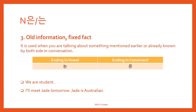Number three: if the noun is old information or a fixed fact, you can use 은/는. It is used when you are talking about something mentioned earlier or already known by both sides in the conversation. Ending in vowel 는, ending in consonant 은. For example, 'We are students' — this is a fact we already know, so: 우리는 학생이에요.